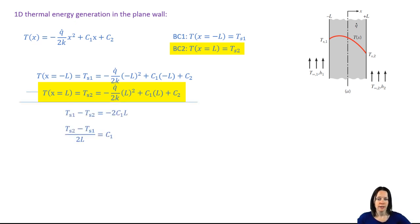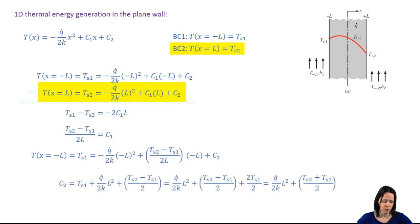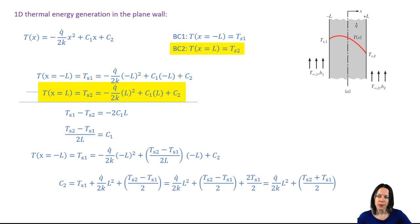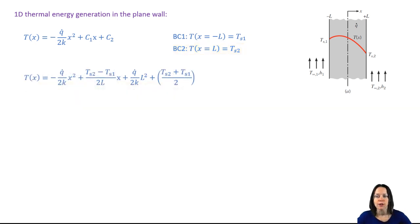Then you can substitute in your equation for C1 into one of those equations up there, and then you can solve for C2. And now we have a nice, clean, well, sort of expression for the temperature distribution.